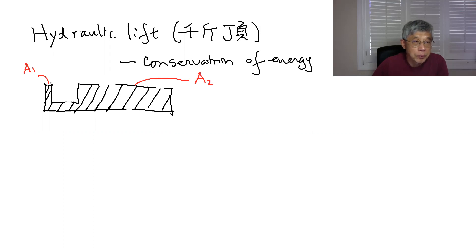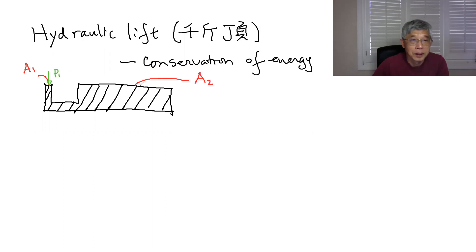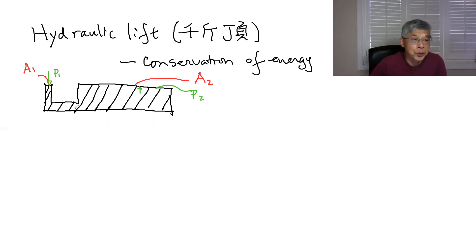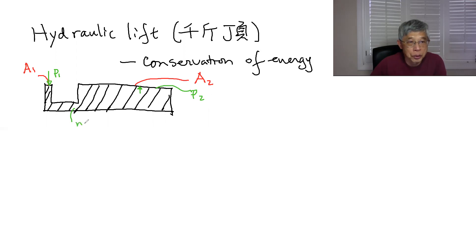Imagine that this fluid is filled up to here. If you press downward with a pressure — let's call that P1 — then what will be the pressure going up on the other side? What will be pressure P2 there? We're going to assume there's no loss of energy when we press here, this moves a little bit, and tries to press up.